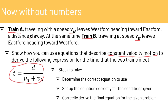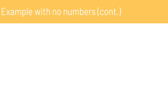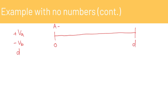Train A is moving in the positive direction, so V_A is positive. Train B is negative, and the total distance traveled is D. Drawing a diagram: we start at zero and go to D. Train A travels in the positive direction with velocity V_A, and train B travels in the negative direction with velocity V_B. We use the equation x equals x-naught plus VT.